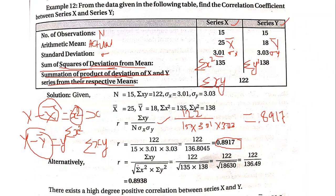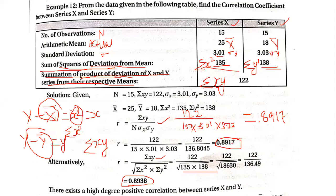There is one more formula: sigma xy divided by square root of summation x-square into y-square. So 122 divided by square root of 135 into 138. First do the multiplication then the square root — 122 divided by 136.49 gives 0.8938. There is only a minor difference between the two results.